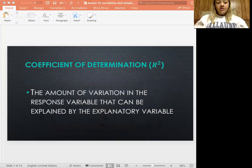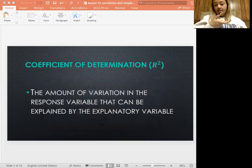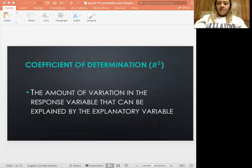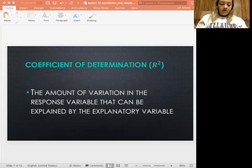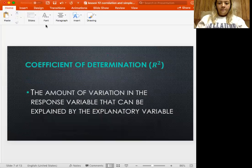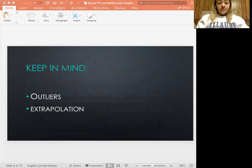Okay, and then just our coefficient of determination, all that is, is you're taking your r and squaring it. And the definition of it is the amount of variation of the response variable that can be explained by our explanatory variables. Remember, explanatory variables is independent, and that's what's explaining our response. And this is kind of going a little bit more in depth and saying, well, how much of that variation can be explained by the explanatory variable? You know, is there other contributing factors, so on and so forth.